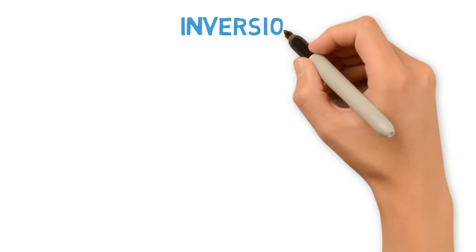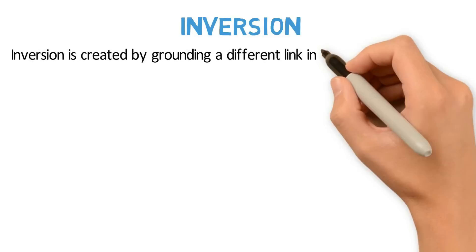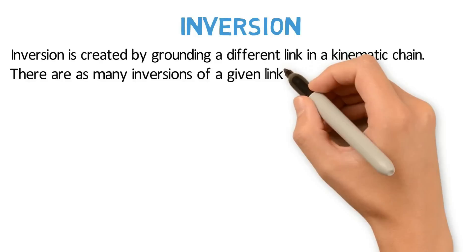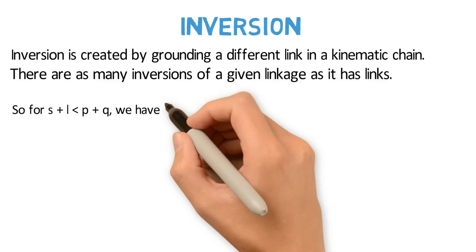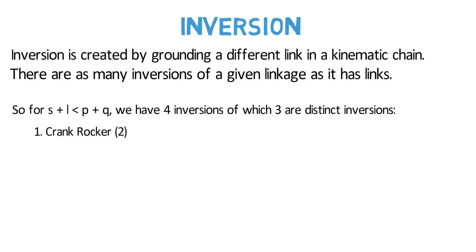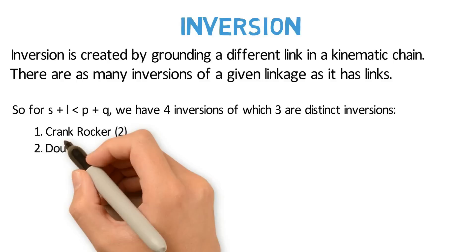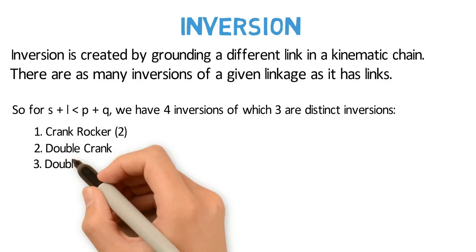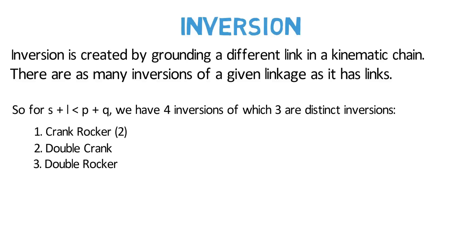Before discussing the second part of the Grashof condition, we will discuss about inversion. Inversion is created by grounding a different link in a kinematic chain. There are as many inversions of a given linkage as it has links. So for S plus L less than P plus Q, we have four inversions of which three are distinct inversions. First, crank rocker, which is obtained by grounding either of the links adjacent to the shortest link — so they are two in number. Second, double crank, which is obtained by grounding the shortest link. And third, double rocker, which is obtained by grounding the link opposite to the shortest link.